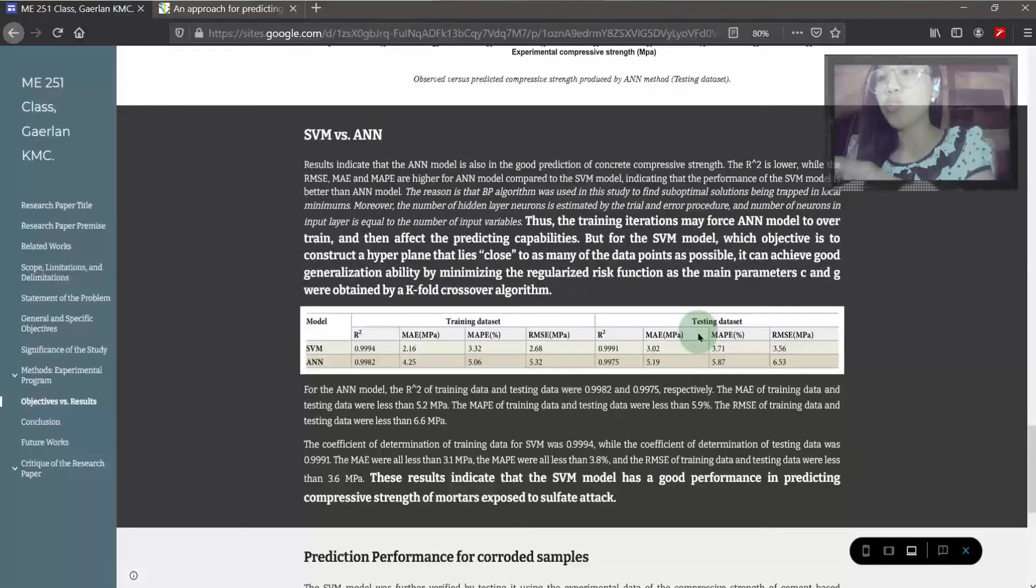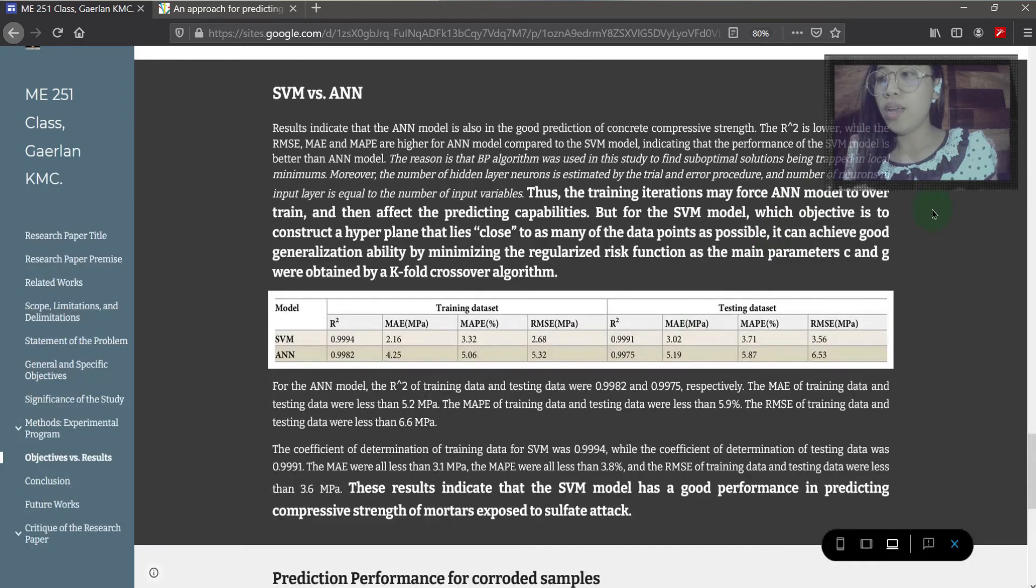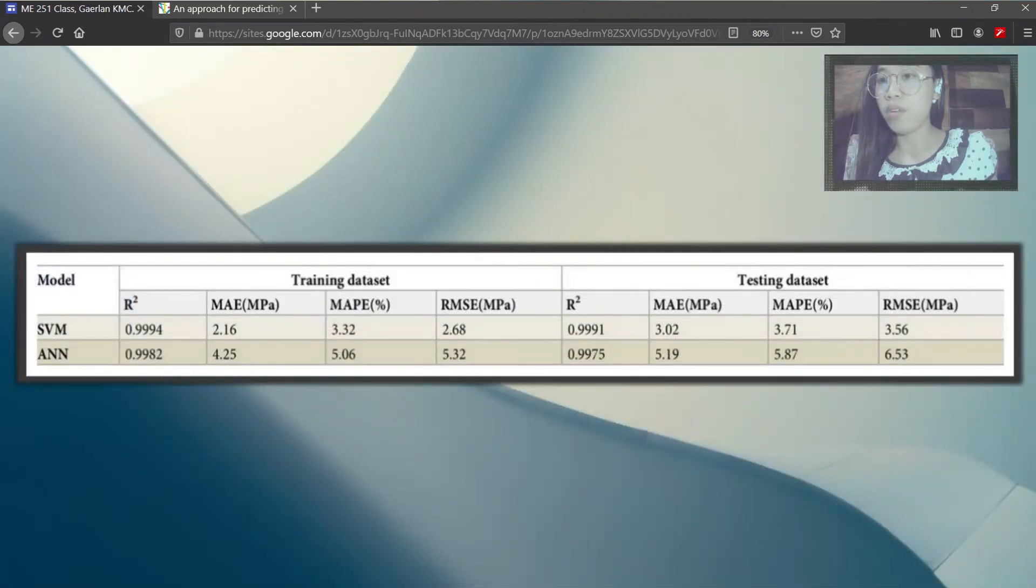Calculation shows that R² of training data and testing data were 0.9982 and 0.9975 respectively for ANN model while SVM was 0.9994 and 0.9991. The MAE were all less than 3.1 MPa, the MAPE were all less than 3.8%, and the RMSE of training data and testing data were less than 3.6 MPa. Results indicate that the SVM model has a good performance in predicting compressive strength of mortars exposed to sulfate effect.